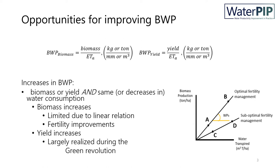Looking at the first way to increase biophysical water productivity, there is limited scope for improvements. Regarding biomass increases, there is a linear relation between water consumption and biomass production.